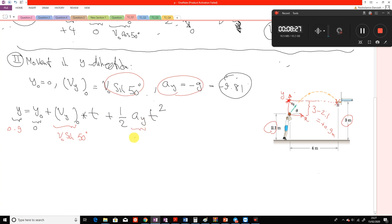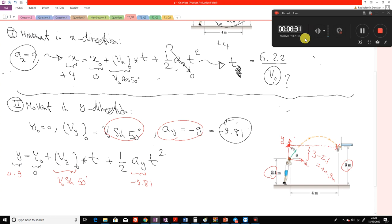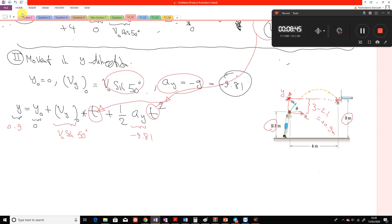This is V0 sine 50. Yes, we just replace from here. Ay you replace from here is minus 9.81, and the t we replace from here. You replace t here and also replace t here from the previous system. Then if I want just to simplify and rewrite what we have: 0.9 equals zero.